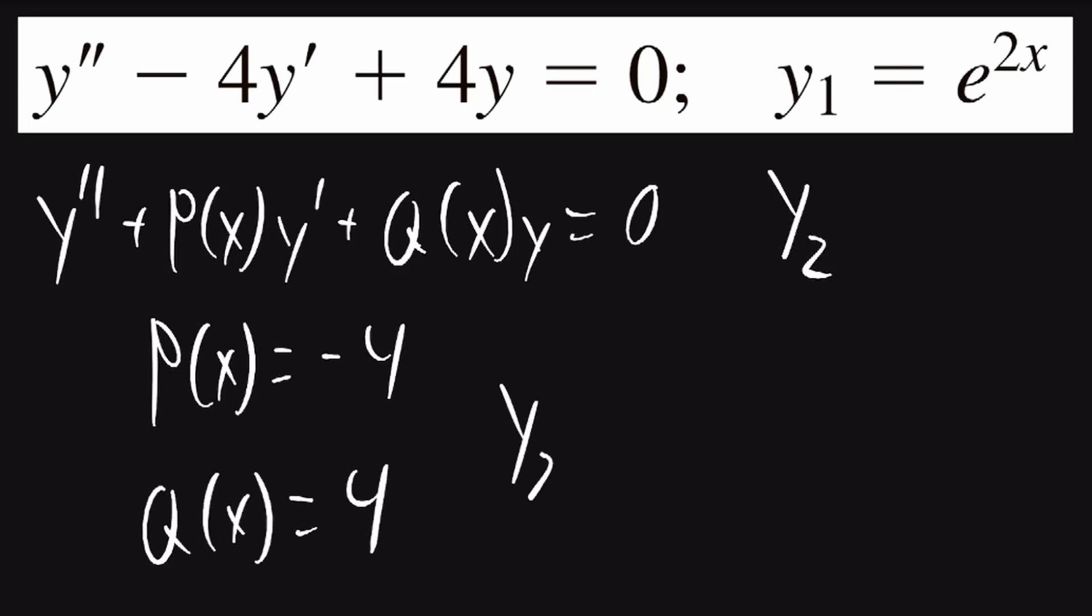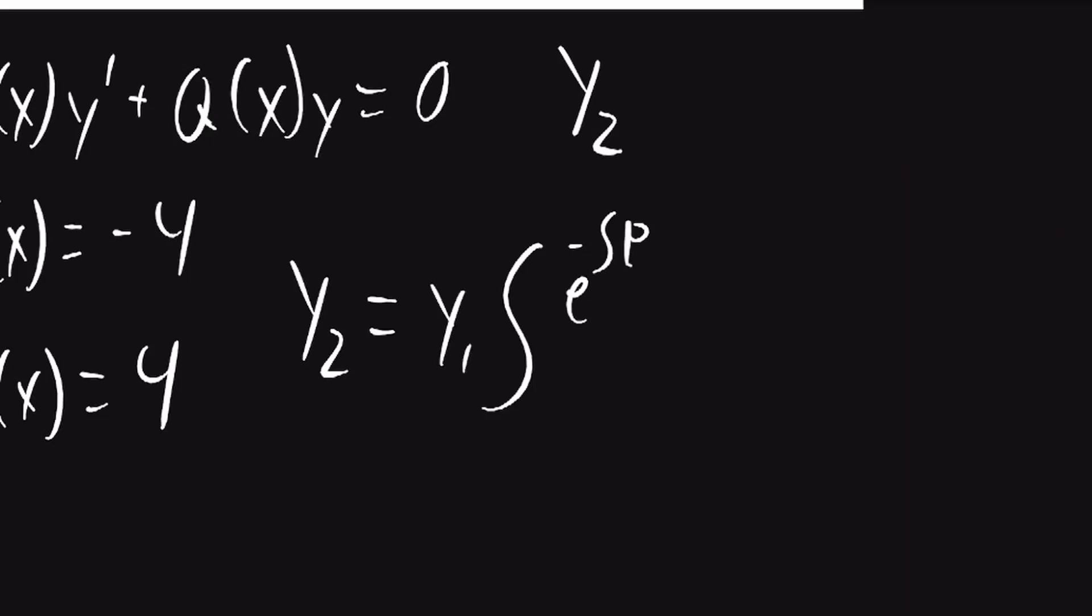We can now use the reduction of order formula to find y2. It'll be equal to y1 times the integral of e to the power of the negative integral of p of x dx over y1 squared. All of that will be with respect to x.